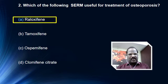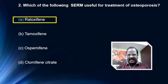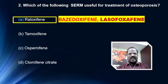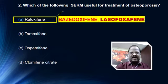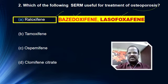Remember, all four options are SERMs. But you should know which SERMs are useful for treatment of osteoporosis. The answers are raloxifene, and two more drugs — bazedoxifene and lasofoxifene. These are the SERMs useful for treatment of osteoporosis.